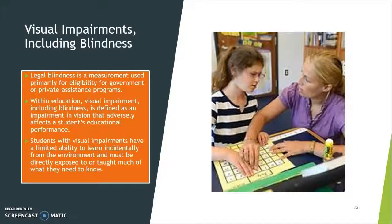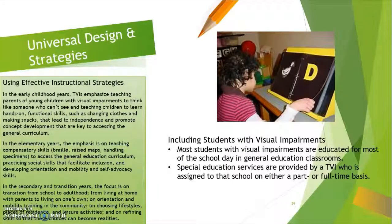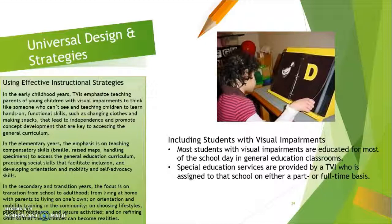Visual impairment including blindness. Legal blindness is a measurement used primarily for eligibility for government and private assistance programs. Within education, visual impairment including blindness is defined as an impairment in vision that adversely affects a student's educational performance. TVIs emphasize teaching parents of young children with visual impairments to think like someone who can't see and to teach children to learn hands-on through functional skills such as changing clothes and making snacks. Learning these at home makes it easier to transition to school. Most students with visual impairment are educated largely in general education, and most of those with some sight read print.